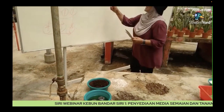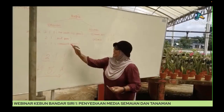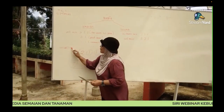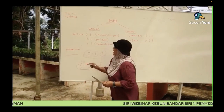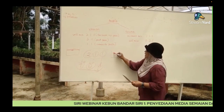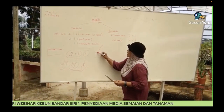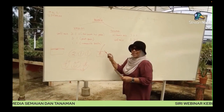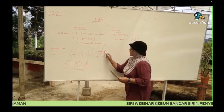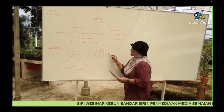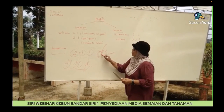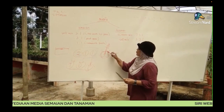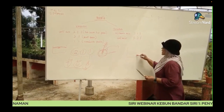Semayan tadi ni, kita nak semai biji benih dan kita cover dia dengan media ni dalam bekas. Ataupun kita letakkan medium ni dan kita ada cutting, dan dia akan setak akar. Akar ni memang kena bagus, kena sihat. Nutrien dan air yang dibekalkan oleh media ni boleh diambil oleh akar untuk pertumbuhan anak pokok ini. Dan bila anak pokok ni dipindahkan ke dalam bekas yang lebih besar, media tanaman punya ciri-ciri ada yang berbeza sebab pokok ni akan membesar lebih lagi.